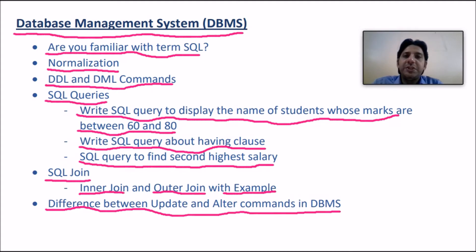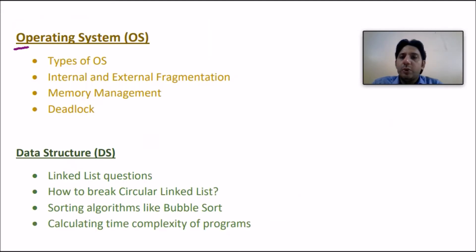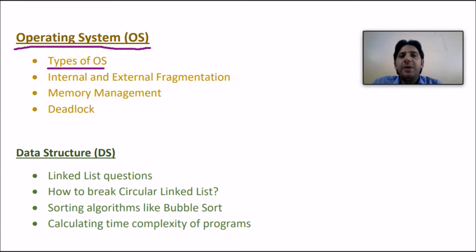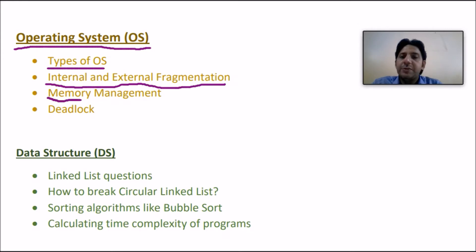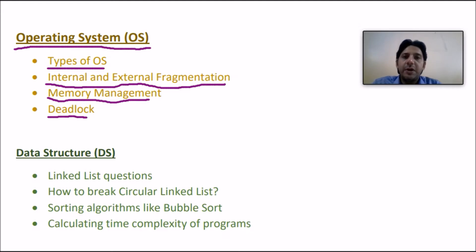For operating systems, the company may ask about types of OS — batch operating system, real-time operating system, embedded systems. Other important topics include internal and external fragmentation, memory management, and deadlock. These are the main topics from which companies may ask questions in the OS section.